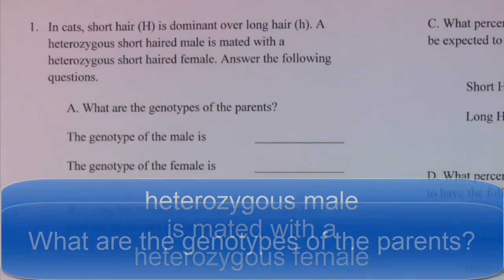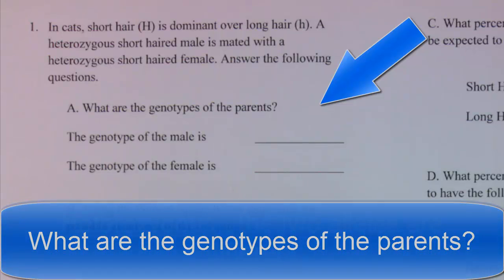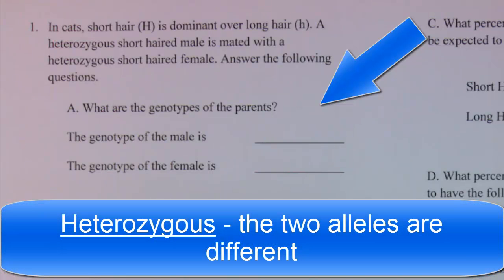So the first thing you want to do to figure out the possible genotypes of the offspring is to figure out the genotypes of the parents. And you need to know what heterozygous means.